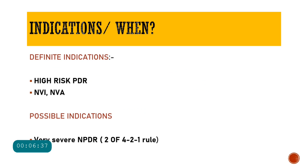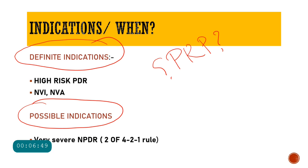When is panretinal photocoagulation performed? There are definite and possible indications. The definite indications per the DRCR study are: high-risk proliferative diabetic retinopathy, and neovascularization of the iris or angle. Broadly, any neovascularization — whether of the disc, elsewhere, iris, or the anterior chamber angle — is an indication for PRP.